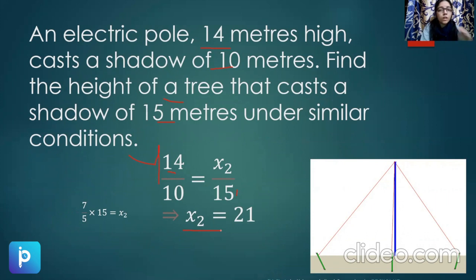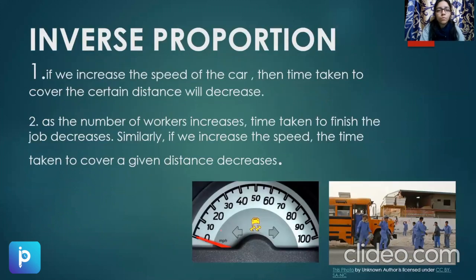So this was direct proportion, that if one quantity increases, the other also increases. Moving to the next, that is inverse proportion.